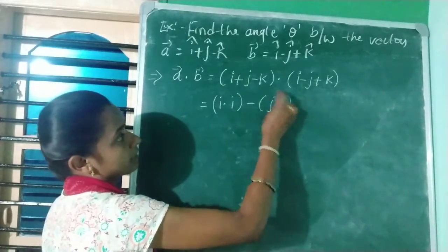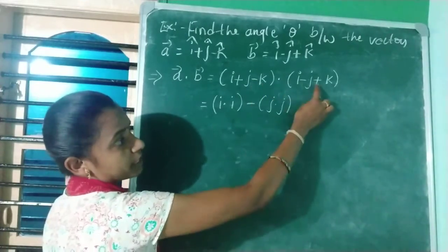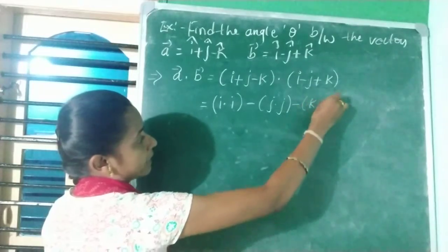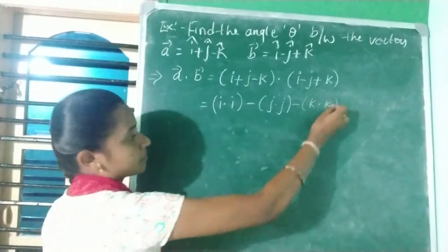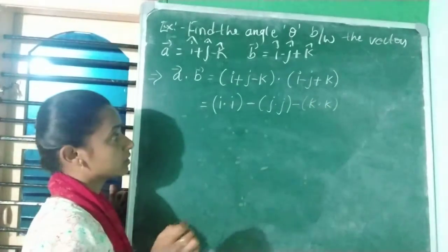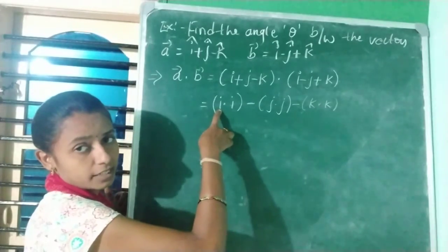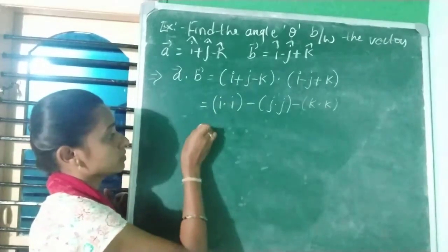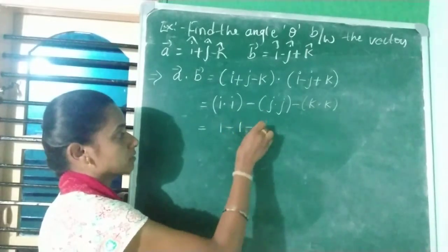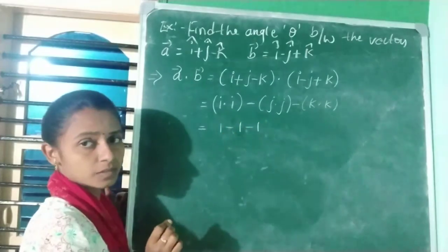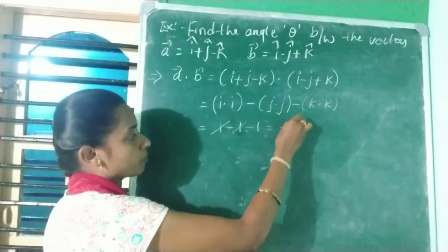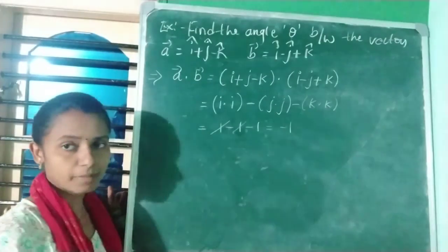Using the observation that i·i = j·j = k·k = 1 and different components equal zero: the dot product gives 1 (i·i) minus 1 (j·j) minus 1 (k·k) = 1 − 1 − 1 = −1. Therefore, a · b = −1.